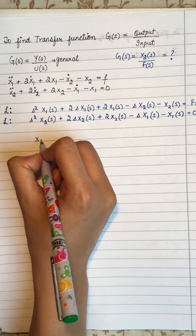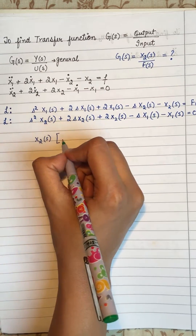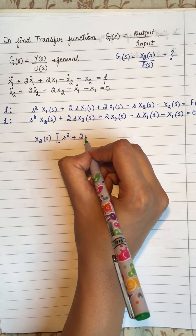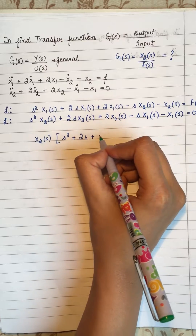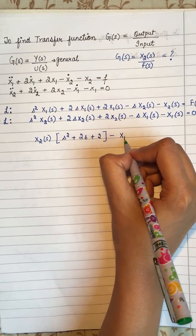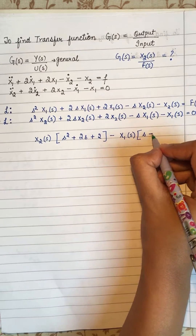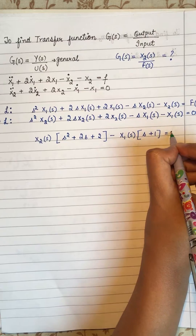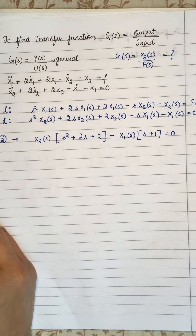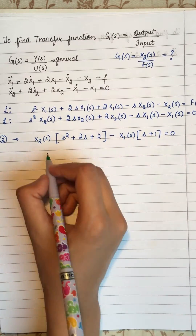So from the second equation, the X2(s) terms give us: X2(s) times (s² + 2s + 2), minus X1(s) times (s + 1), equals zero.